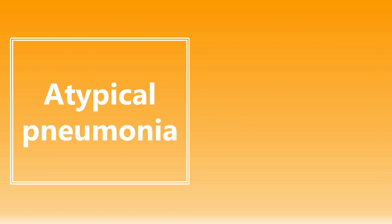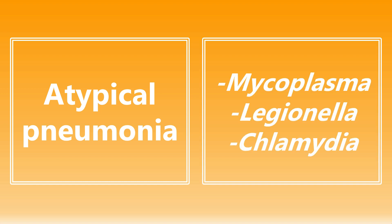The next one: atypical pneumonia, which some people used to call walking pneumonia. There are a couple of causative organisms here that you need to know — that's going to be Mycoplasma, Legionella, and Chlamydia. So if there's atypical pneumonia, it's going to be Mycoplasma, Legionella, and Chlamydia.